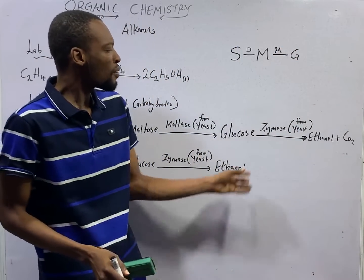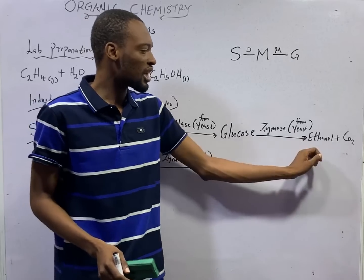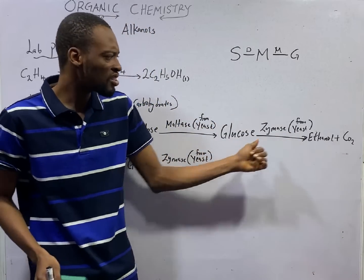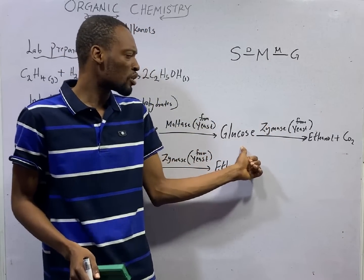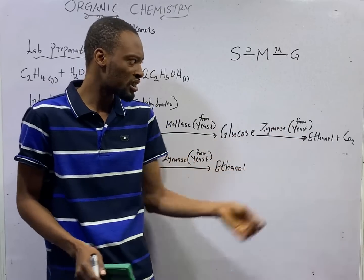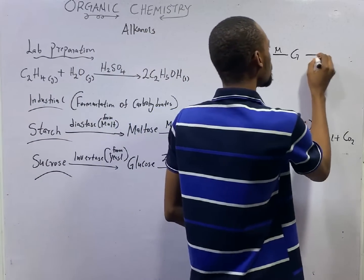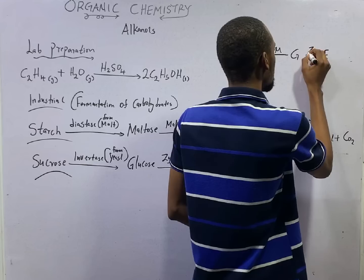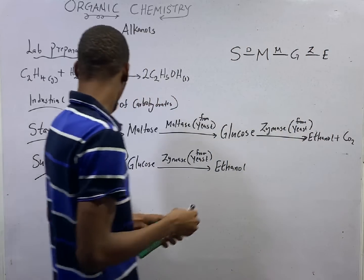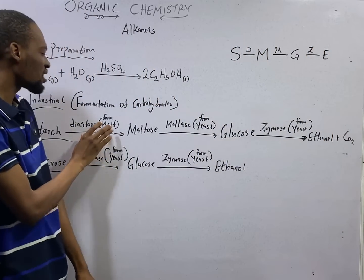From glucose to ethanol, an enzyme called zymase, we add on glucose to convert this glucose to ethanol. So, from glucose to ethanol, zymase.